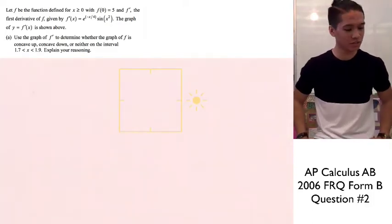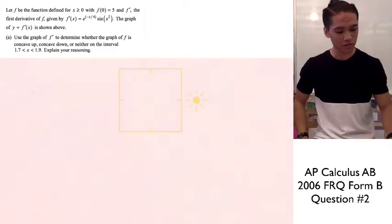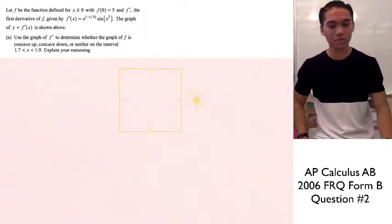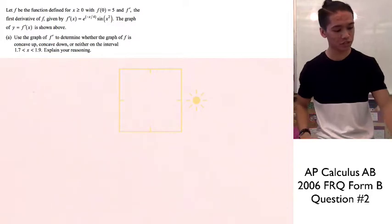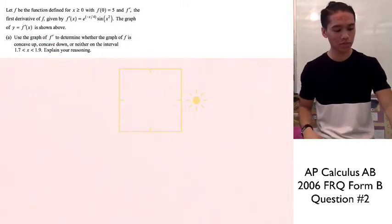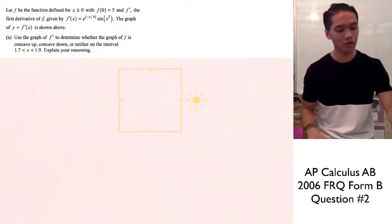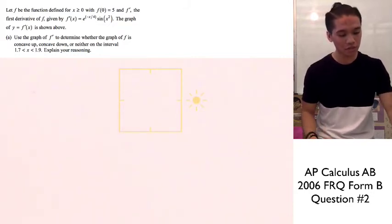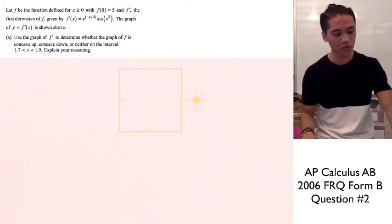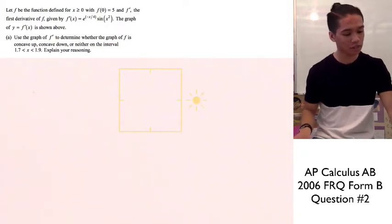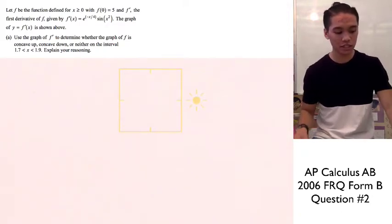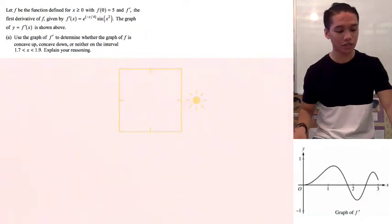Let's go ahead and answer this 2006 FRQ from the AP Calculus AB test, question 2. The problem says: let f be the function defined for x greater than or equal to 0, with f(0) equaling 5, and f prime — the first derivative of f — given by f'(x) = e^(−x/4) times sine of x squared.